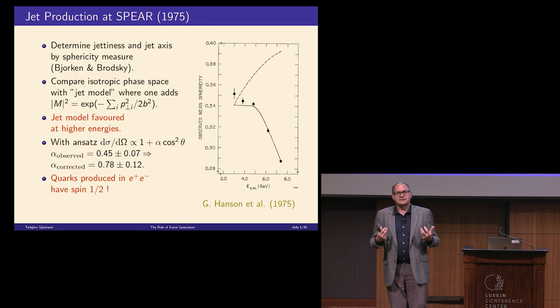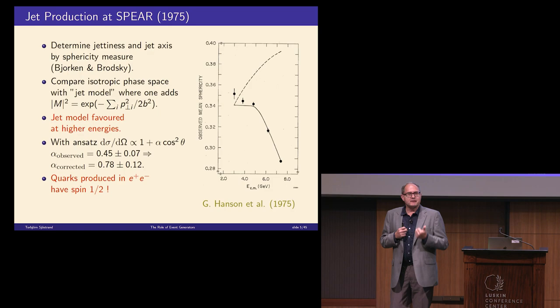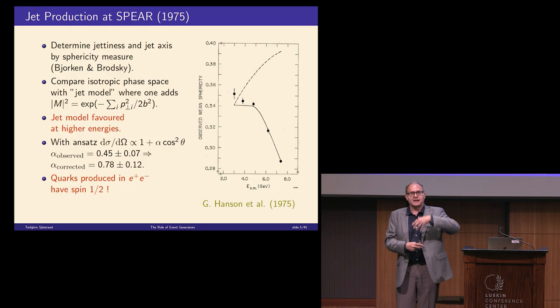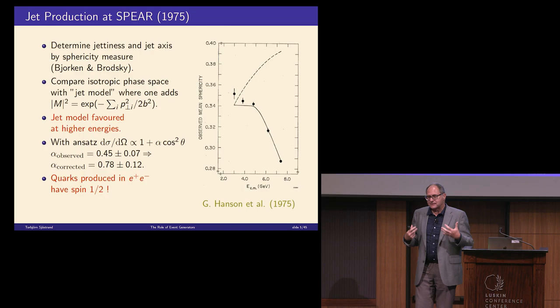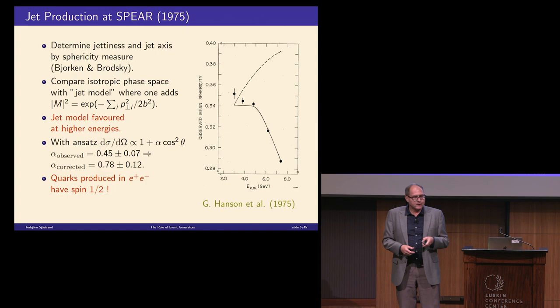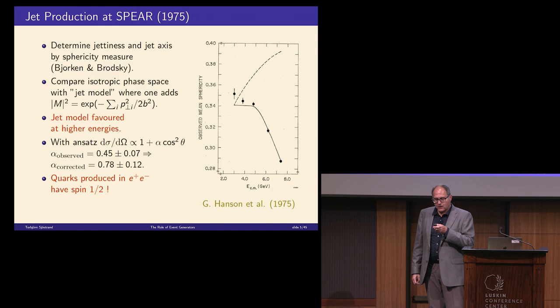You can study the angular distribution of this jet axis with one plus alpha cos theta squared. Experimentally, you observe a value of 0.45. The question is, what does that mean in real life? The sphericity axis is not the same as the original quark-antiquark axis, and you have detector effects. Thanks to this modeling, you can find a corrected value and conclude that quarks have spin one-half. This is a nice way of illustrating how you can use simple models to draw interesting conclusions.